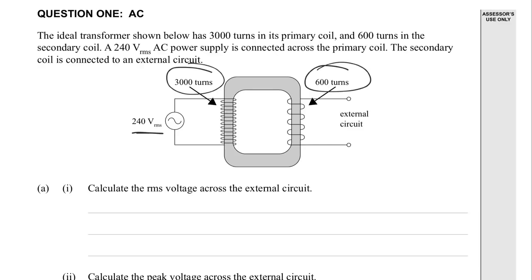It says calculate the RMS voltage across the external circuit. So this is our ratio here. So we've got 3,000 turns over 600 turns. It's going to be equal to the 240. Sorry, other way around.